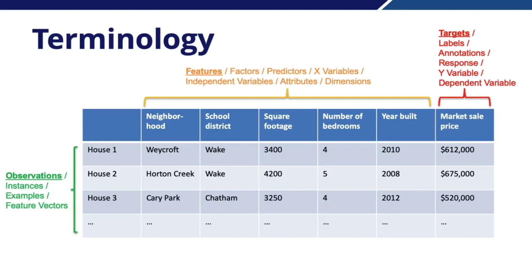Finally, the last column is different from the others — it represents what we are trying to predict. In our house example, this is the sale price. This column is called the target, because the objective of our model is to predict it. It can also be called a label, an annotation, a response, a y variable, or a dependent variable.